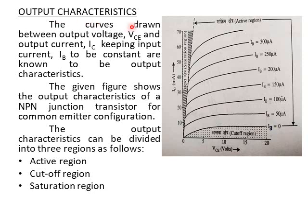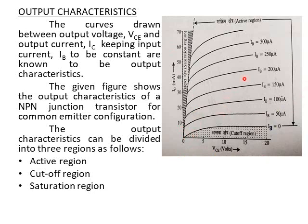Now, output characteristics: the curves drawn between output voltage VCE and output current IC, keeping input current IB constant, are known as output characteristics. In this, input current is kept constant and curves between output voltage and output current are plotted. The given figure shows the output characteristics of an NPN transistor for Common Emitter configuration, where graphs between VCE and IC are drawn for different values of IB.